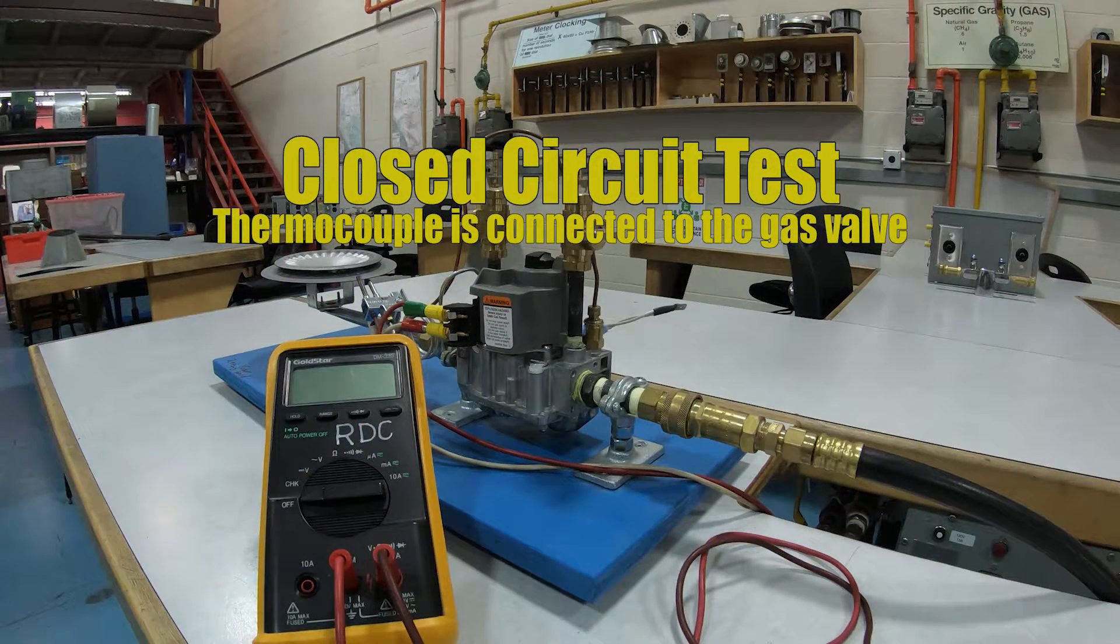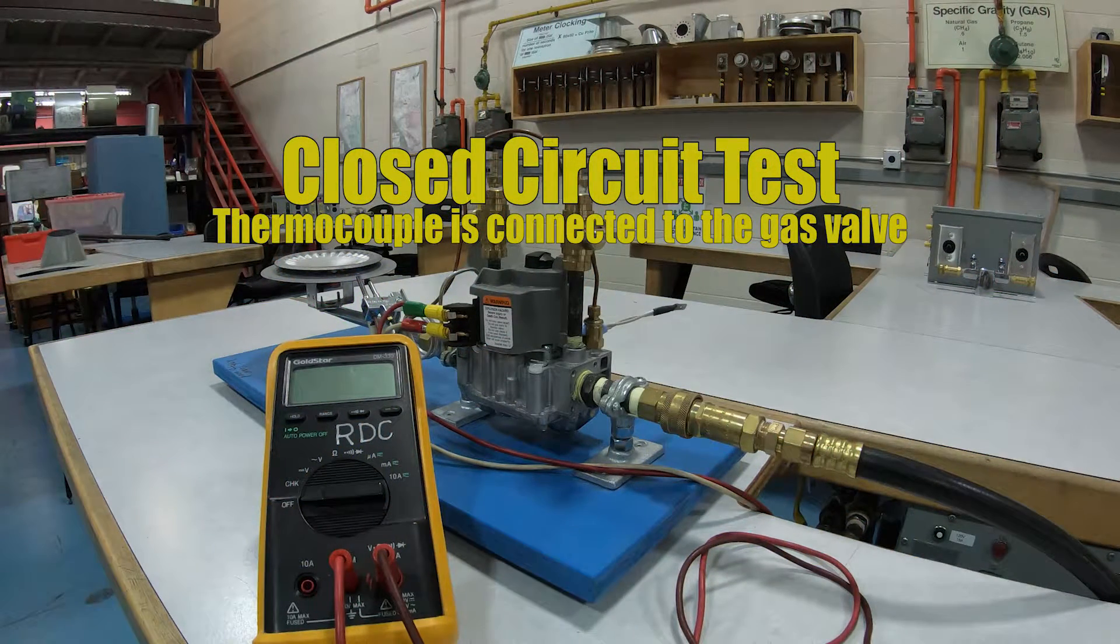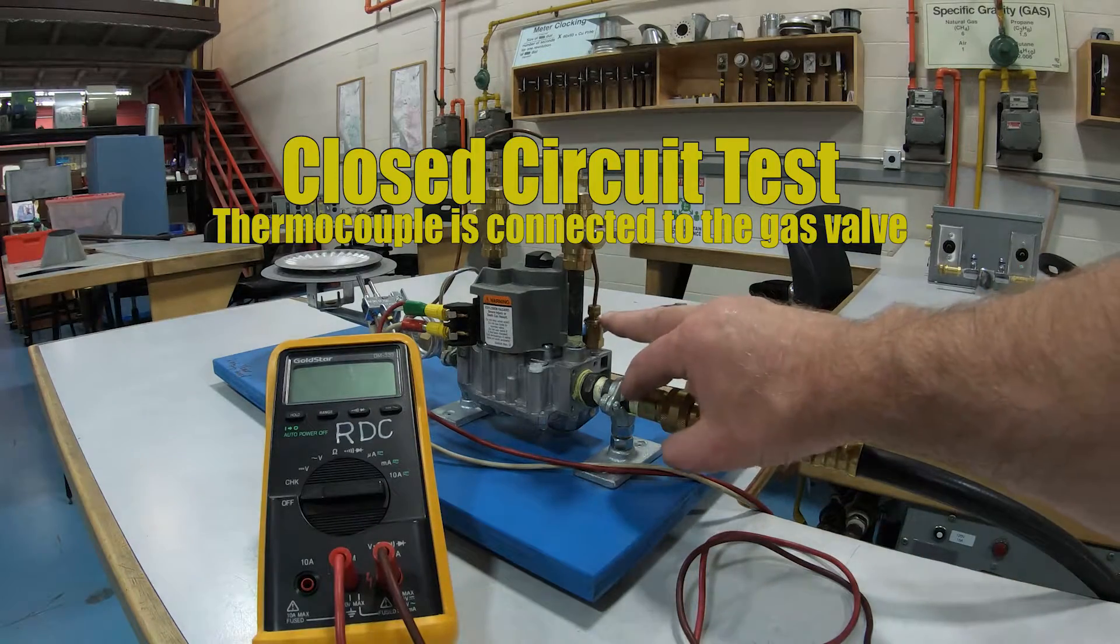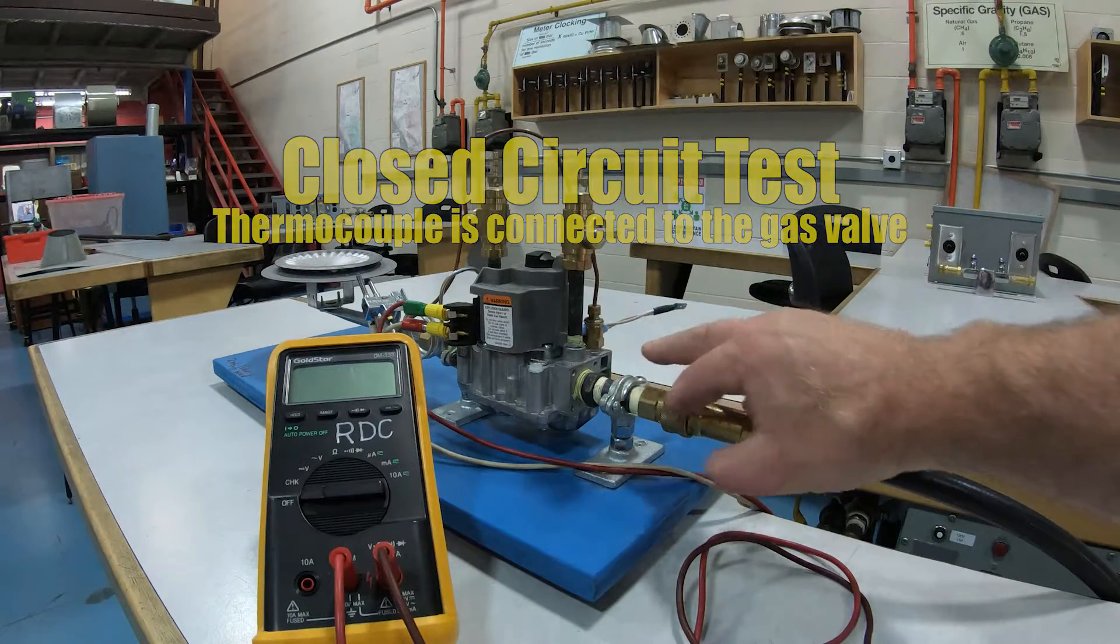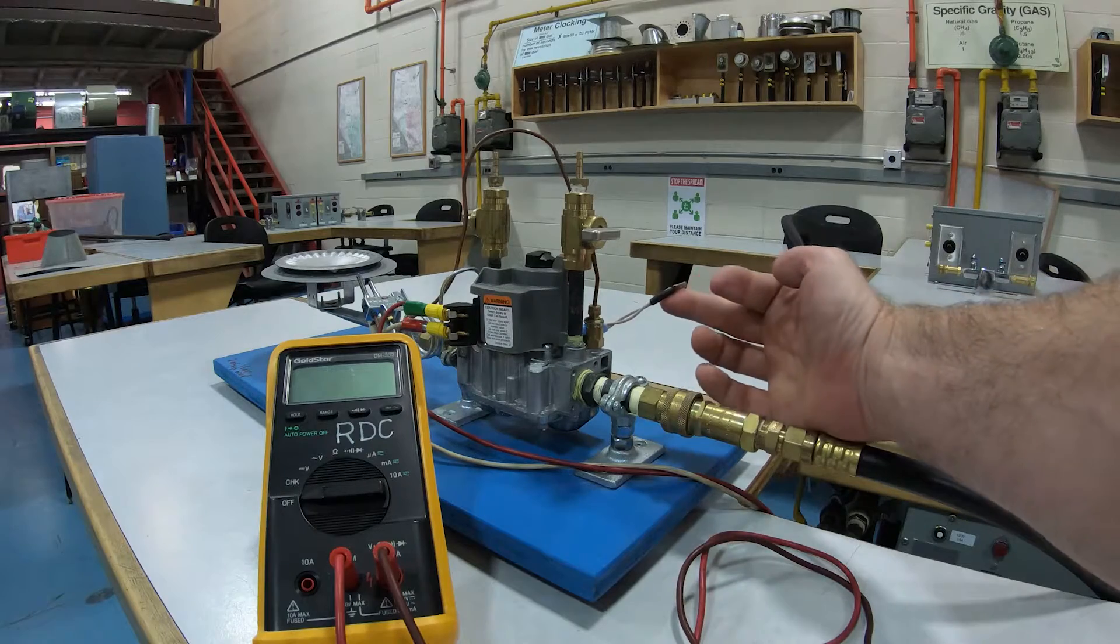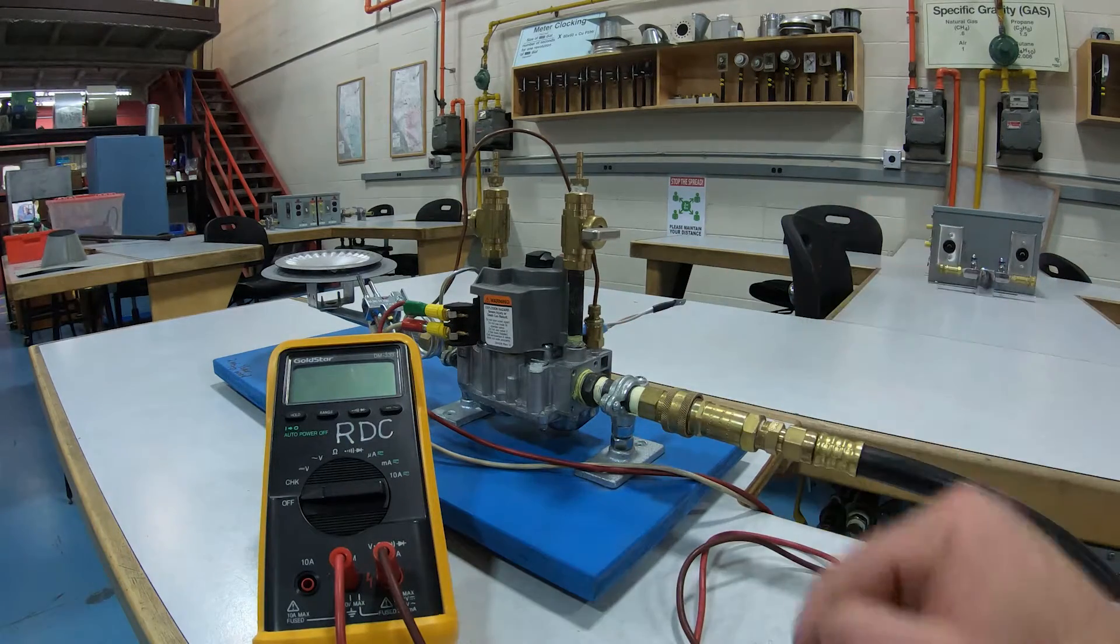Let's demonstrate a closed circuit test. Closed circuit means the thermocouple is actually attached into the gas valve. Now we have a special adapter here with this wire coming off of it. We just call that a test adapter.